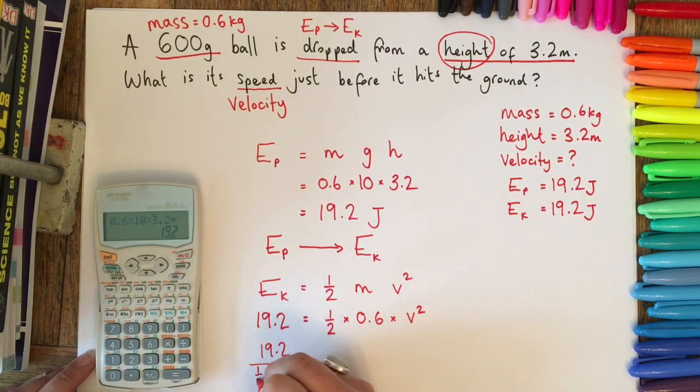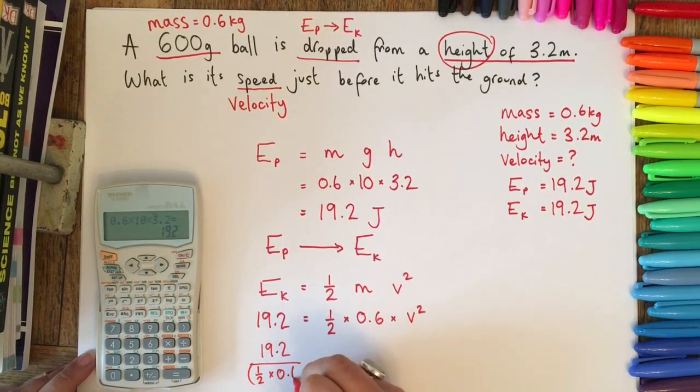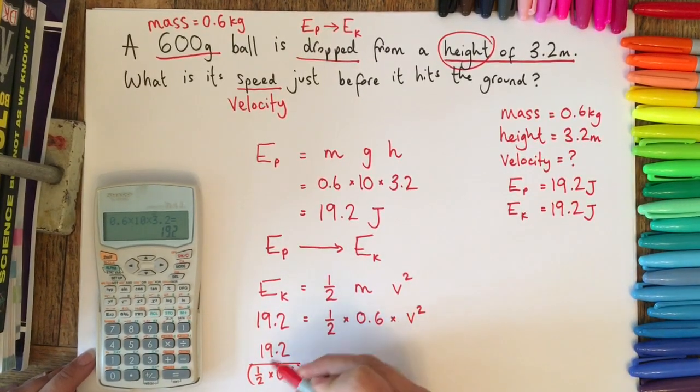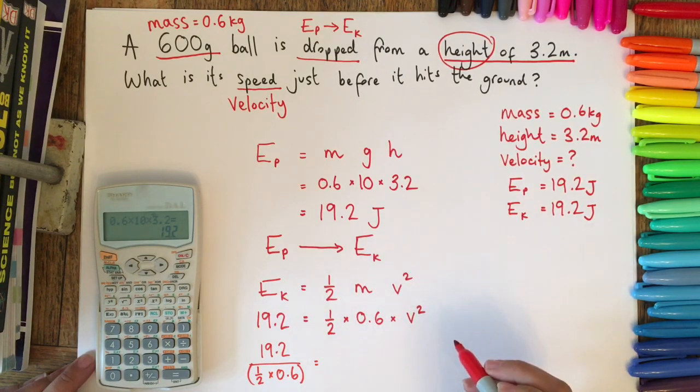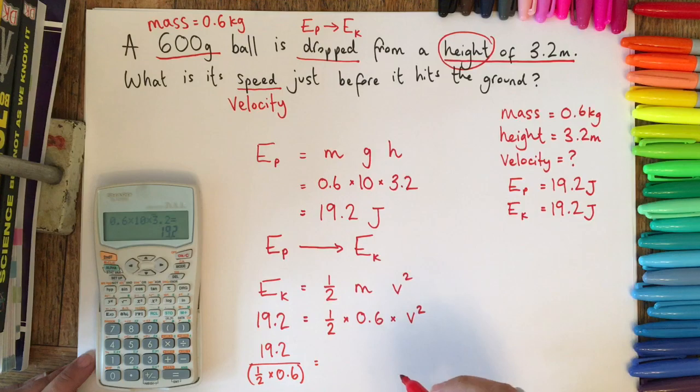If you've been shown a little bit of a different method for rearranging the kinetic energy equation to find v, then do whatever you find is easiest. But it's just trying to keep the algebra simple for some people. So 19.2 over a half times 0.6 will equal v squared.